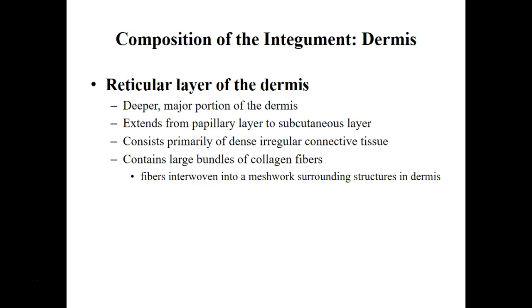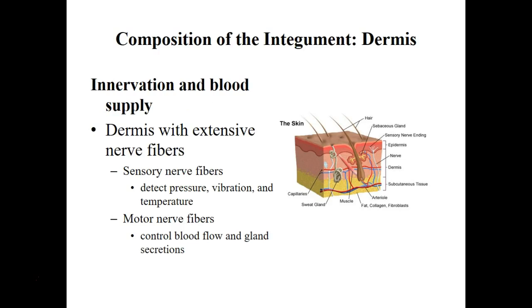The reticular layer is the deepest region, composed mainly of dense irregular connective tissue, which protects us from mechanical stress. Our skin is constantly under mechanical stressors and the reticular layer protects us from those. Both the papillary region and the reticular region have a really good nerve supply. These nerve fibers detect changes in the environment — pressure, vibration, temperature changes, and pain — and send signals to the nervous system and the brain.